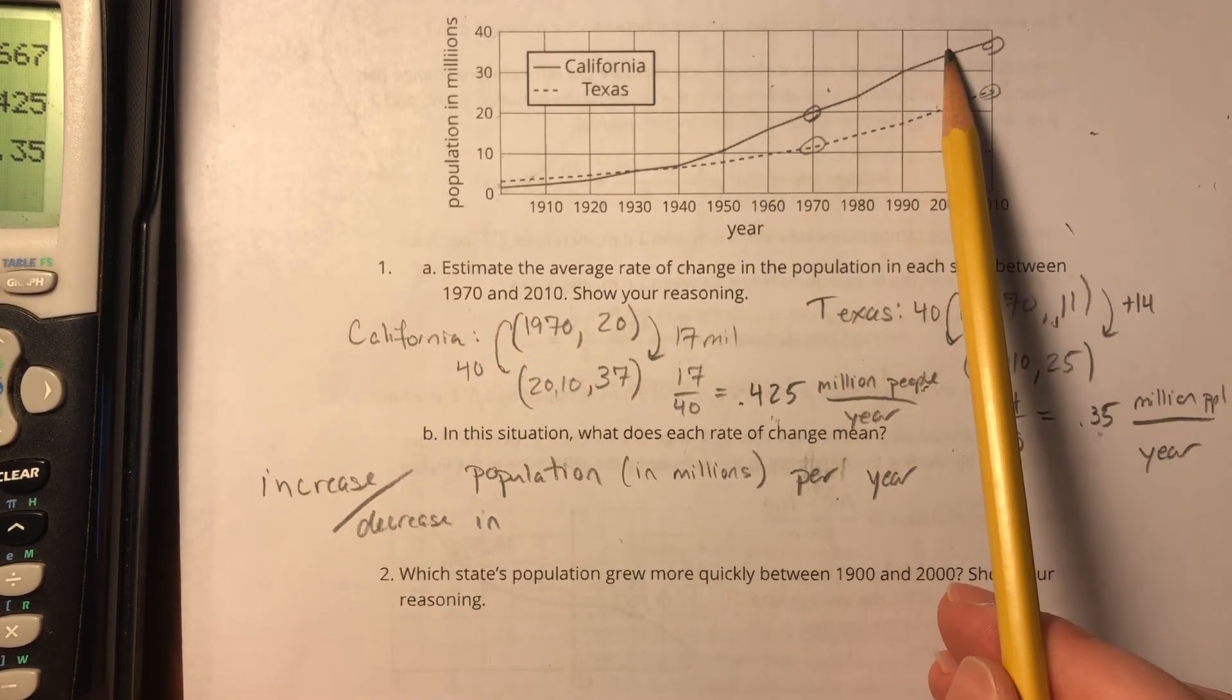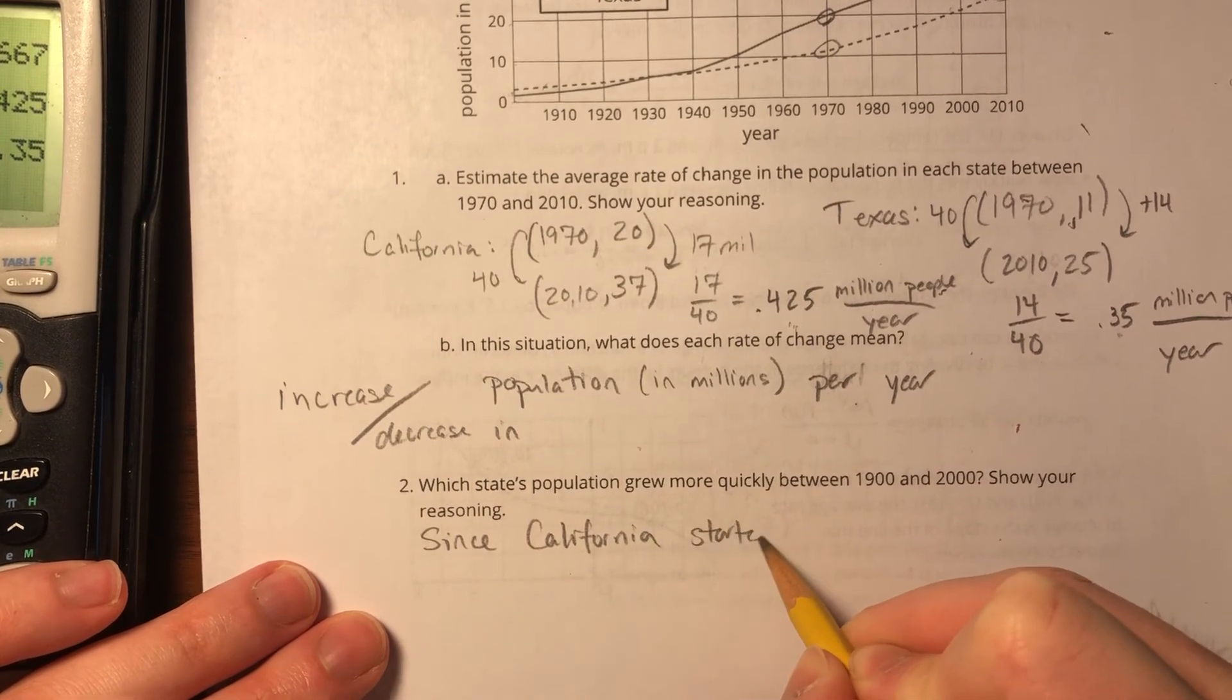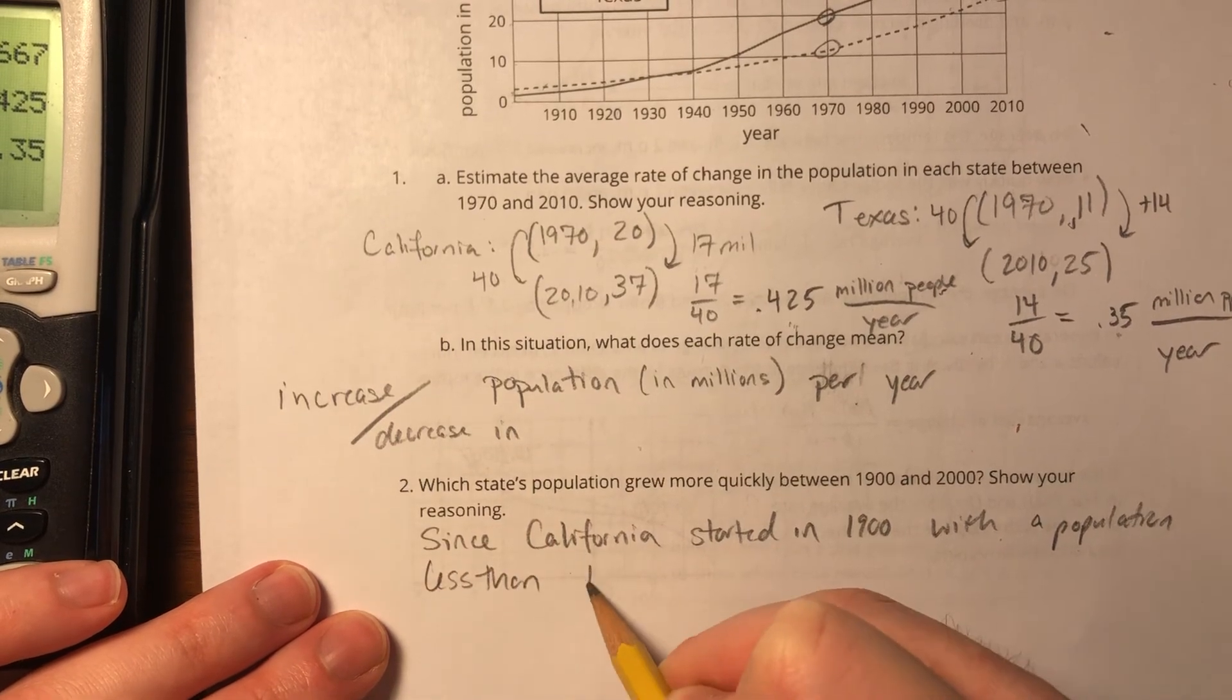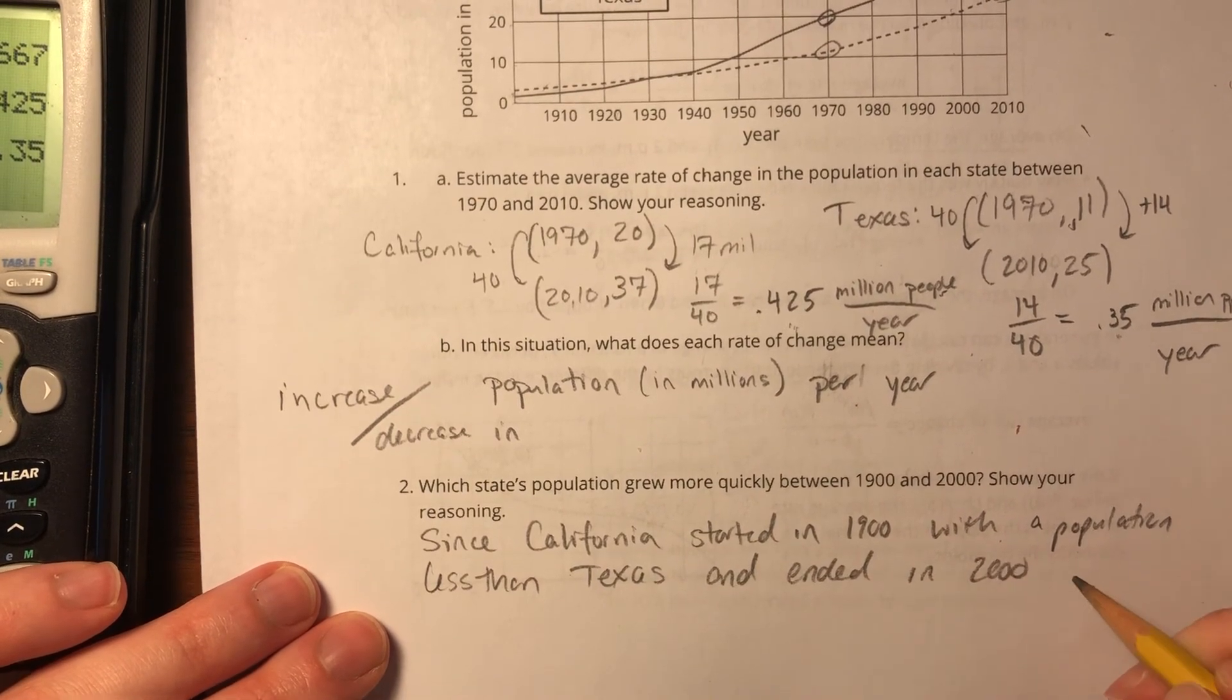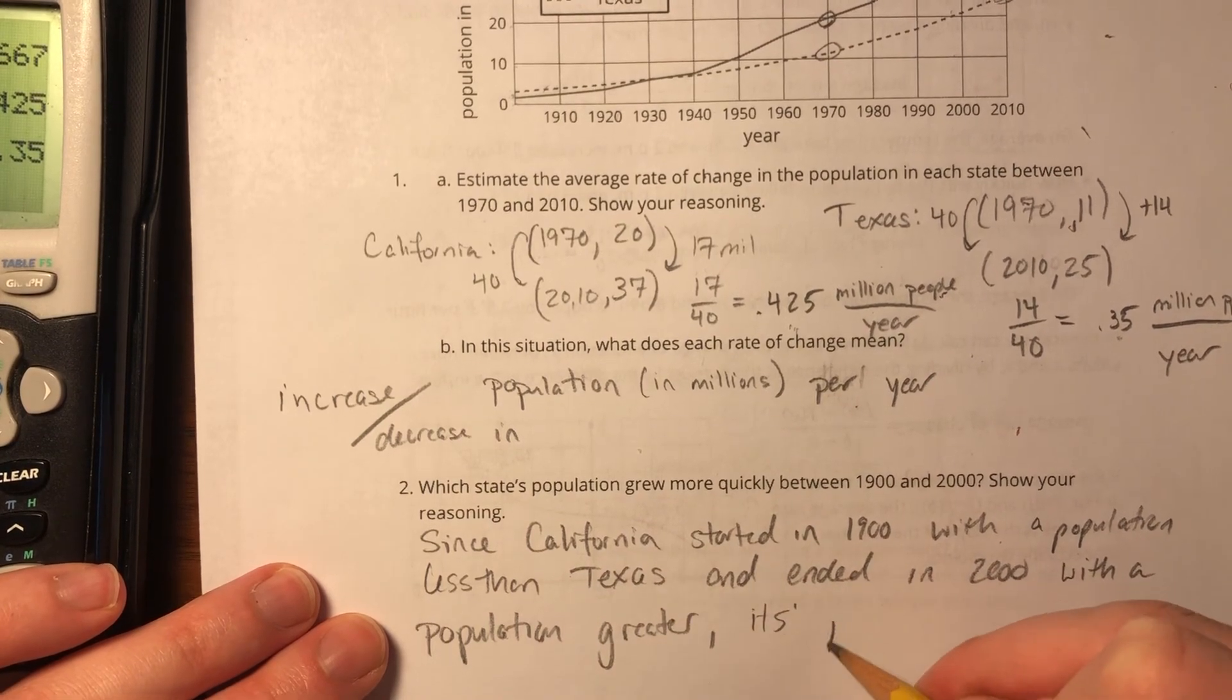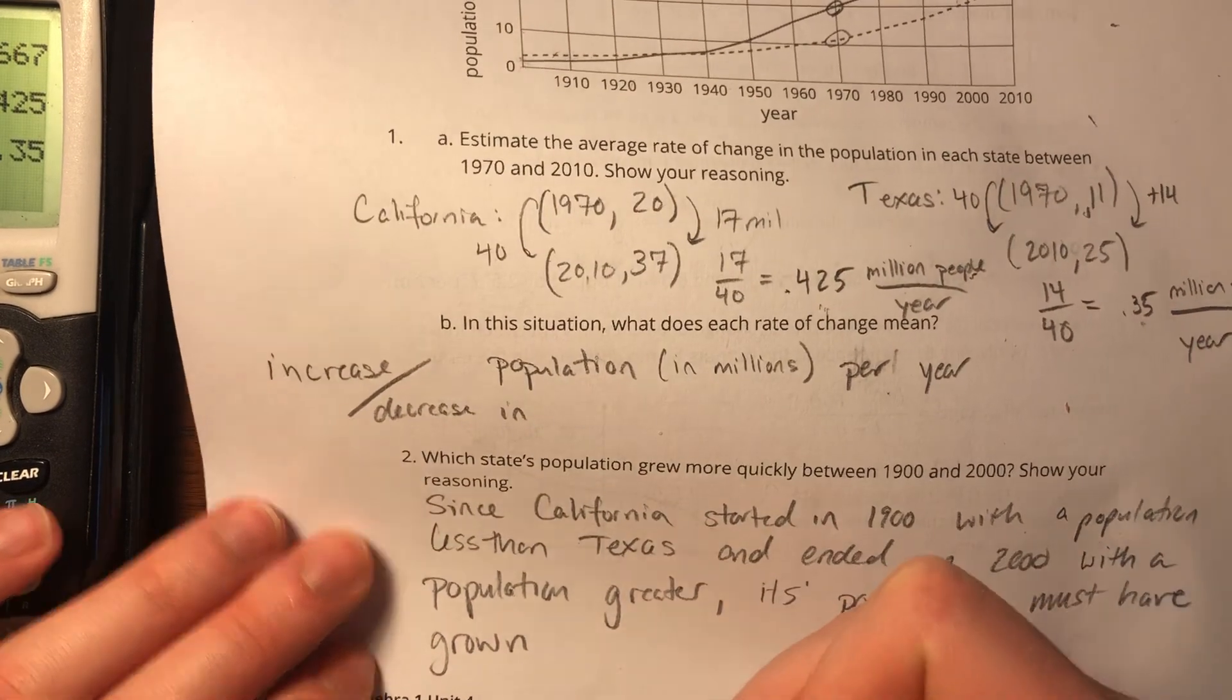And by the time we hit 2000, it's way above. So I can say since California started in 1900 with a population less than Texas and ended in 2000 with a population greater, its population must have grown more quickly.